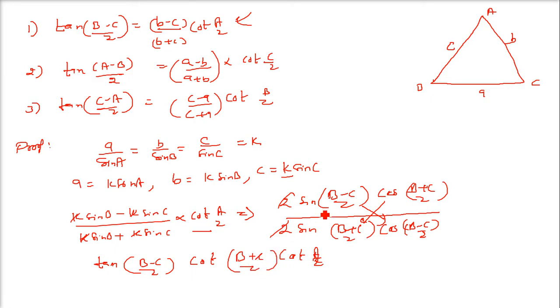Now see b plus c. In this triangle a plus b plus c is equal to pi, 180 degree. So what will be b plus c? It will be pi minus a. Now put in here.